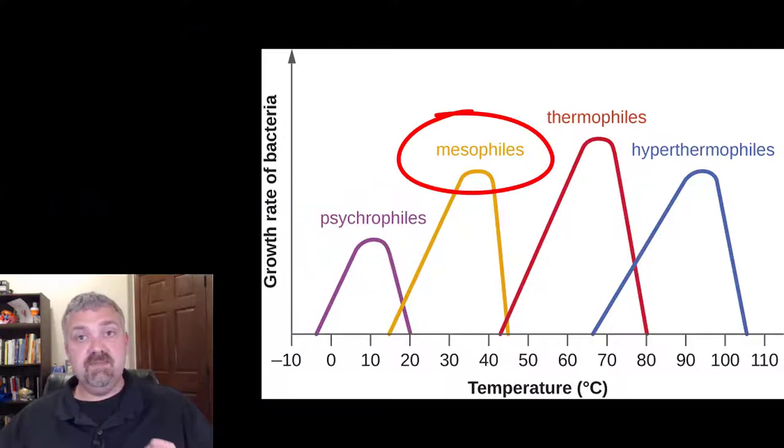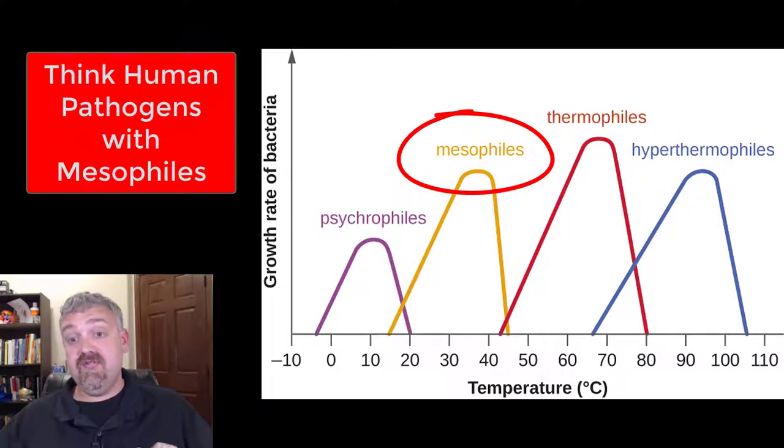The mesophiles, so these are going to be almost all your human pathogens. And because mesophiles will grow at body temperature and room temperature, they can lead to some foodborne illness and food spoilage as well. So for mesophiles, think human pathogens. So like when we use an incubator in the lab, it's almost always set at 37 degrees Celsius because that's where your pseudomonas and E. coli and staph and strep, all these organisms that we care about grow at that temperature. So the mesophiles think human disease pathogens.